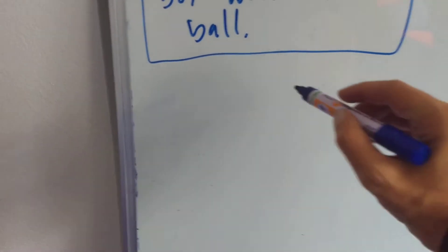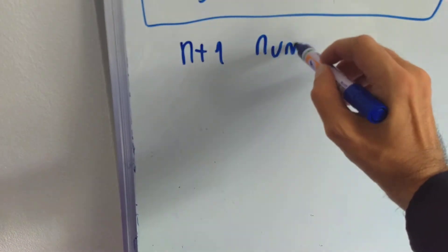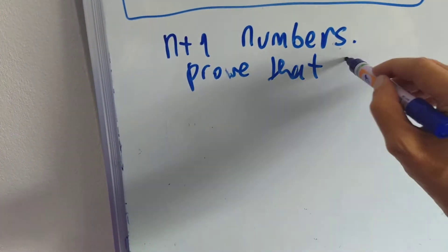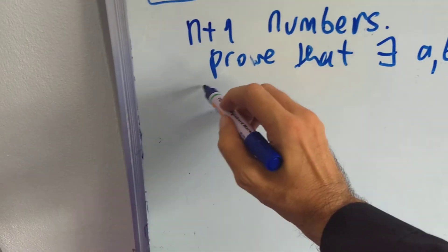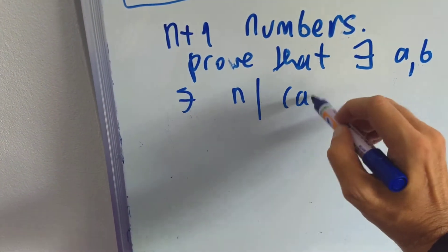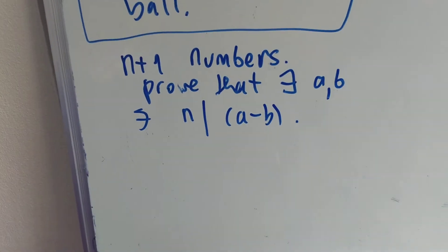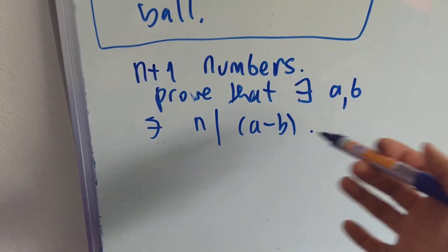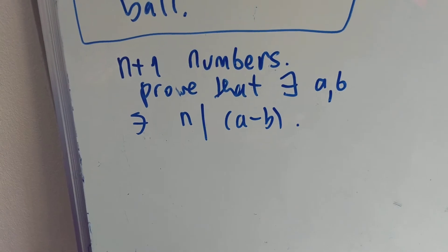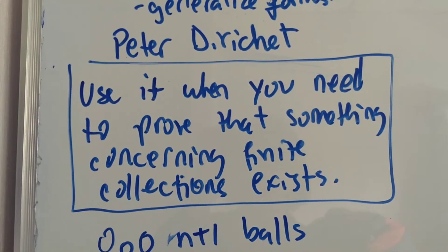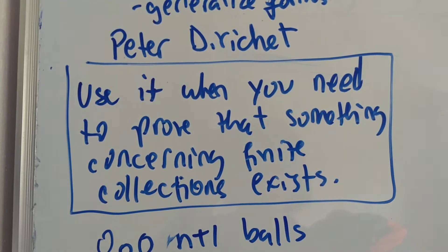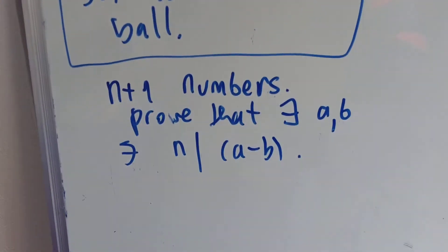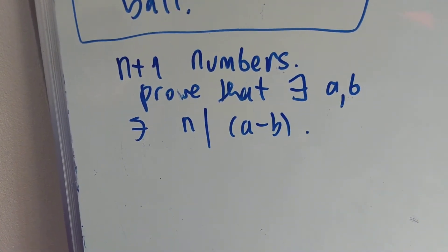The first problem is an easy one: I have n+1 numbers, and I want to prove that there exist a and b among them such that n divides a minus b. You might ask: how can I prove something like that? I don't know what n is, I don't know what a and b are, I don't even know what these numbers are. That is exactly the situation where you use Dirichlet's principle — when you need to prove that something concerning finite collections exists and you really don't know how to do it.